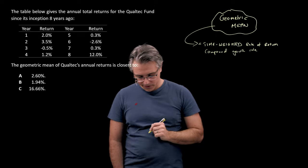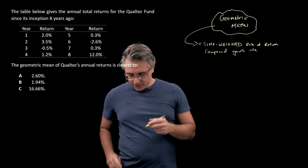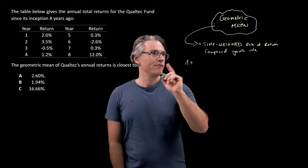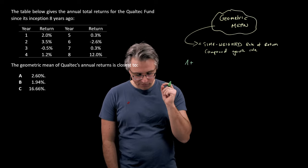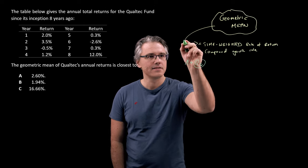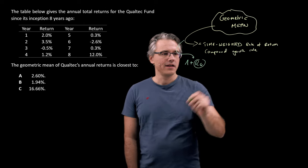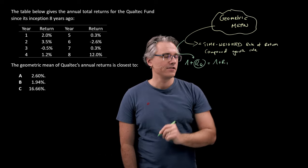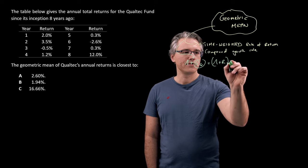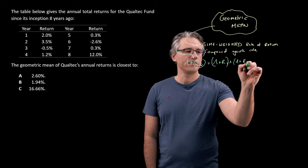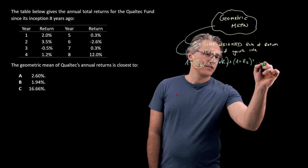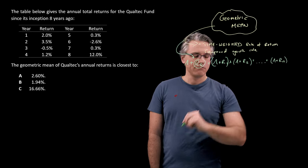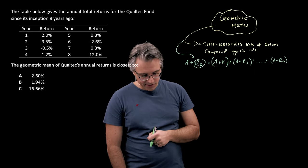Well, in order to compute it, you're going to follow this logic. One plus the geometric mean, I'm going to symbolize it as RG, is equal to one plus the rate of growth in the first period times one plus the rate of growth in the second period. And this could continue for as long as there are periods ending with period n or the growth rate for period n.